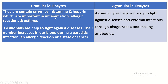The granular leucocytes contain enzymes, histamine, and heparin, which are important in inflammation, allergic reaction, and asthma. Eosinophils help to fight against disease; their numbers increase in the body during a parasitic infection, an allergic reaction, or a state of cancer.